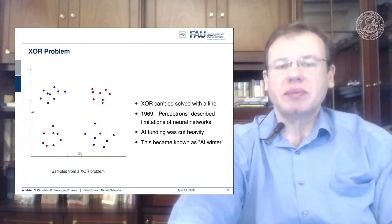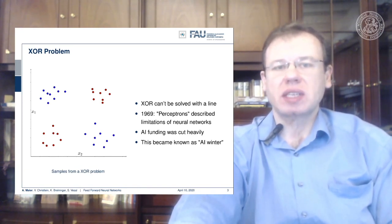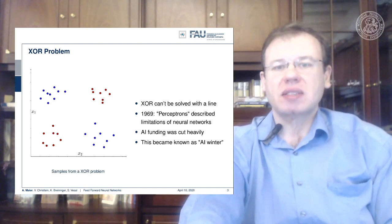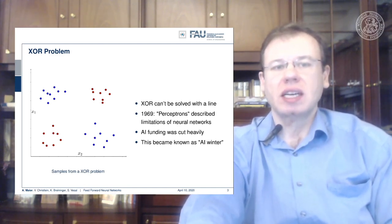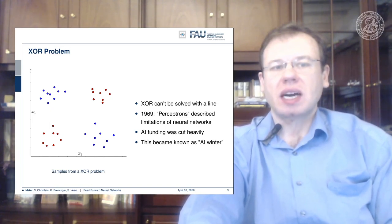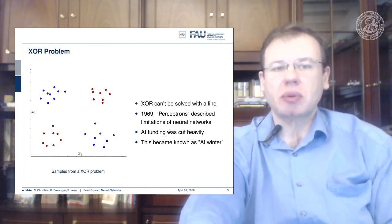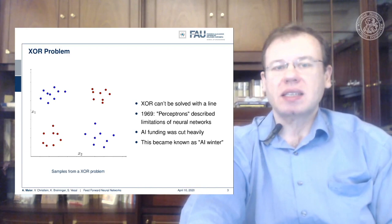What we have seen in the perceptron is that we are able to model linear decision boundaries. This immediately led to the observation that perceptrons cannot solve the logical exclusive or, the XOR. You can see the visualization of the XOR problem here on the left-hand side. If you look at this, inspired by the logical XOR function, then you will not be able to separate those two point clouds with a single linear decision boundary. With a single perceptron, you will not be able to learn to solve this problem.